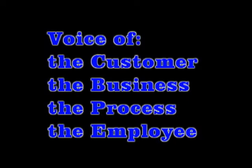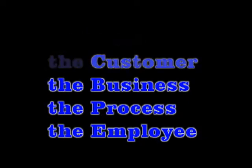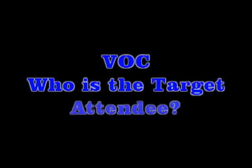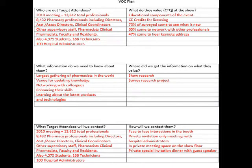One very useful tool for hearing the customer is the VOC Plan. This is a document constructed in order to define who the target attendee is — in other words, who's using the offering — what needs to be known about and from these target attendees, and how to obtain this information. Meaning, is the data about these target attendees coming from surveys, focus groups, interviews, video measurement and analysis, attendee complaints, attendee objections, other exhibitors, booth staff interviews, or maybe even just show research in general.